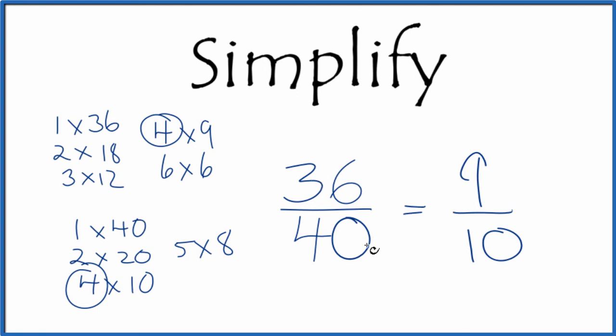These are equivalent fractions. If you divide 36 by 40 or 9 by 10, you'll get 0.9, the same thing for both fractions because they're equivalent.